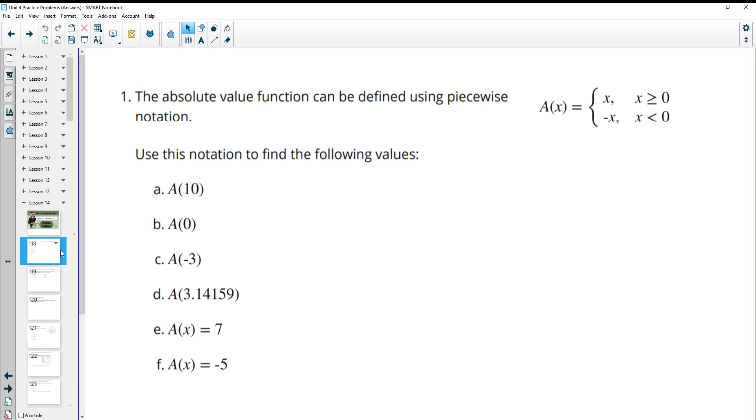Number one, the absolute value of a function can be defined by using piecewise notation, which you can see over here on the right. Use this notation to find the following values. This says that A(x) equals x if x is greater than or equal to zero, and if x is less than zero, then it's the opposite of x.